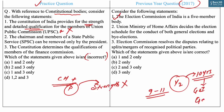No qualifications are prescribed for UPSC membership except that one-half of the members should have held office for at least 10 years under the Government of India or a state government. Statement two says: the chairman and members of a State Public Service Commission can be removed only by the President — this is correct. Although appointed by the Governor, they can be removed only by the President, on the same grounds and in the same manner as a UPSC chairman or member.